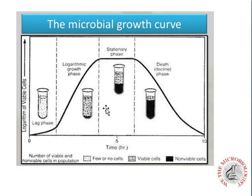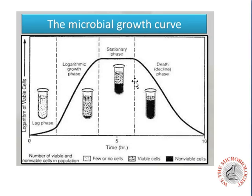In the stationary phase, you can find that around 50% of the cells are surviving and 50% are not — it is kind of like survival of the fittest. Next, in the death phase, you can see no viable cells at all, or very very few.